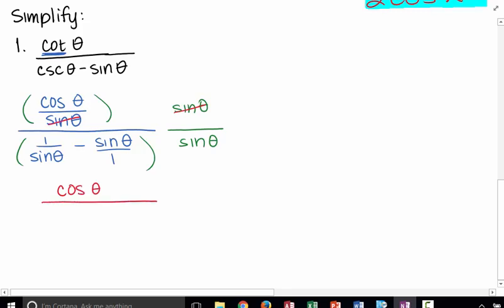Then in the denominator, again, you have to distribute as appropriate. So, I'm distributing here. The reciprocal of sine theta times sine theta will give me a 1, and then minus sine times itself will give me sine squared theta.